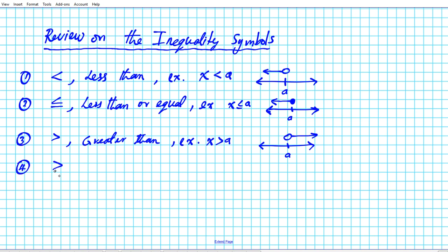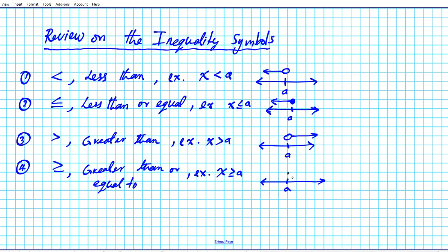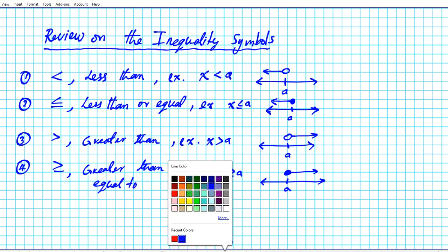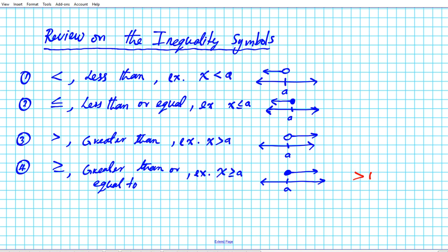Last but not least is greater than or equal to — it has that inclusion component. An example: X is greater than or equal to a. It points in the same direction as greater than, but since you have that equality component, it's going to be a closed circle. Think of greater than or equal to as greater plus equal, and less than or equal to similarly — both use closed circles to indicate inclusion.